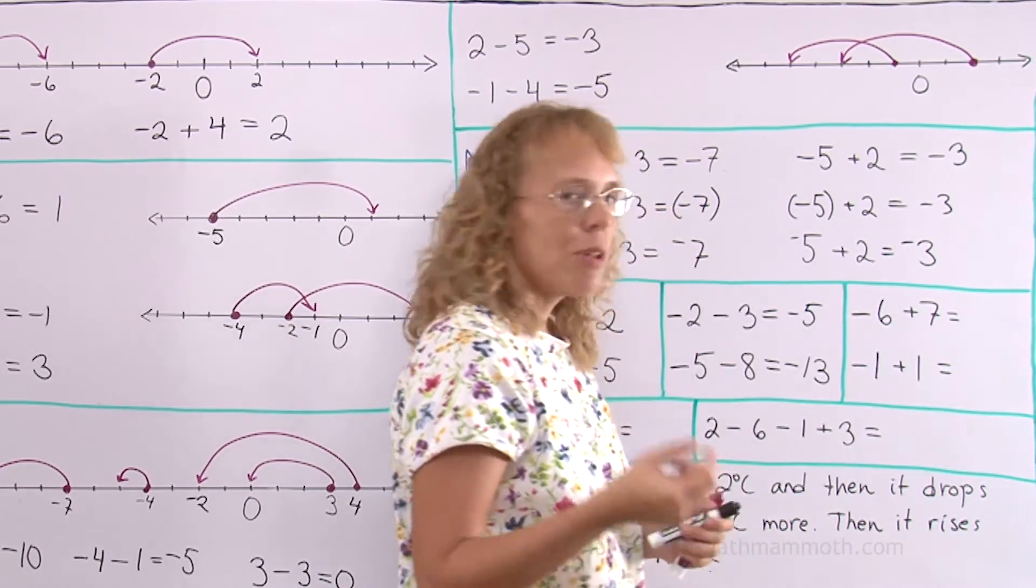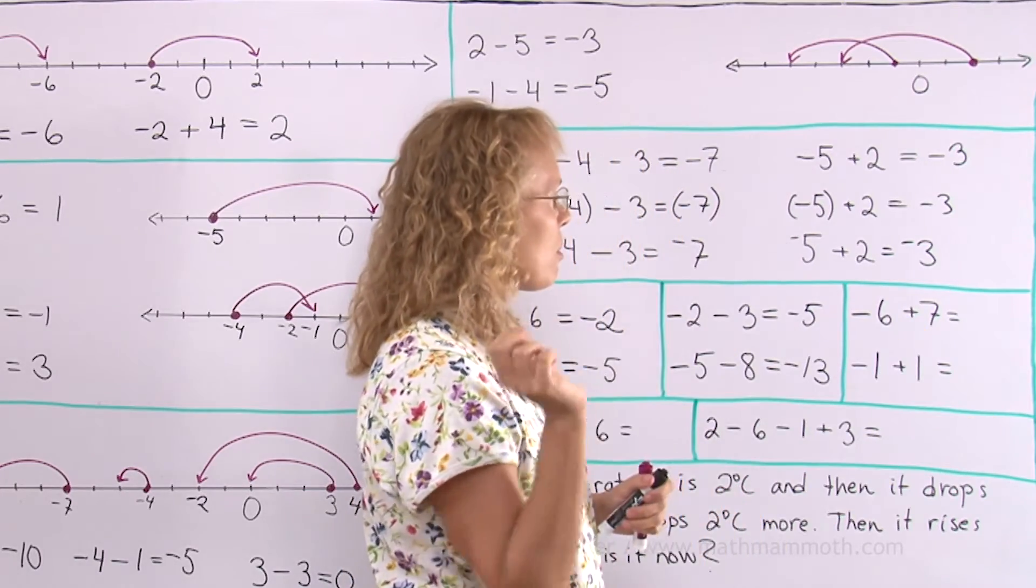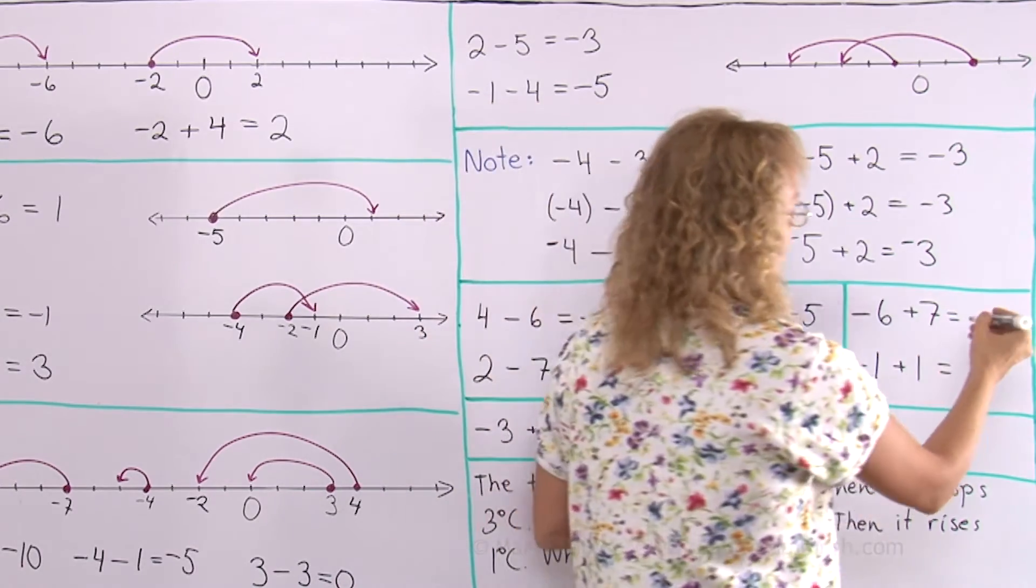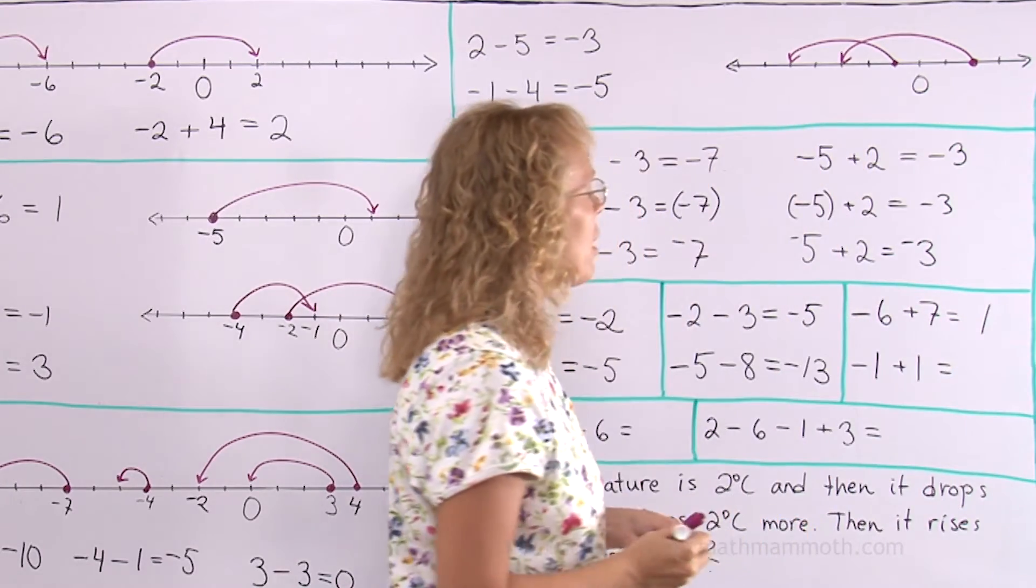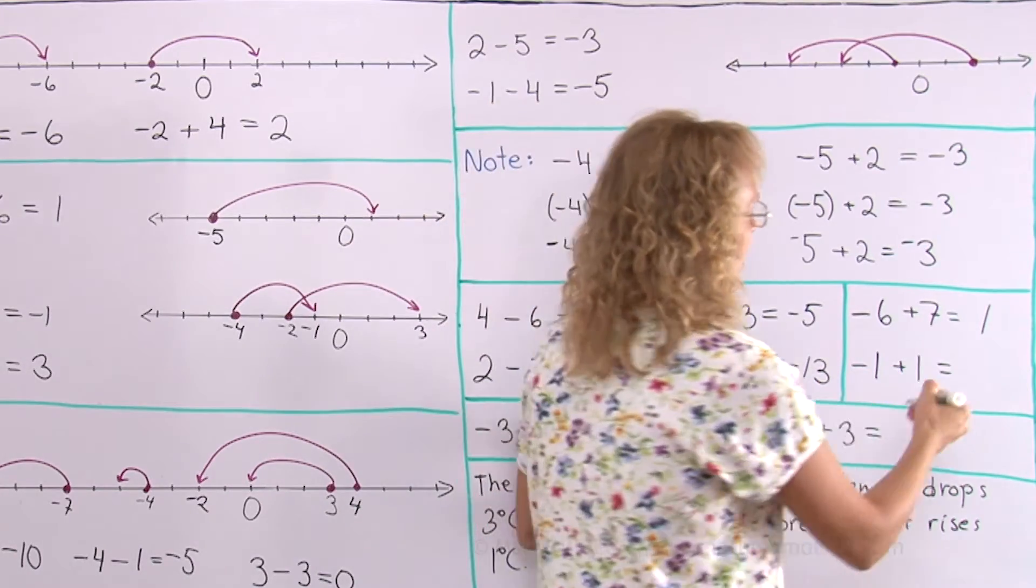Minus 6 plus 7. Now you are in the negatives but you come towards the positive. And 7 steps towards the positive is enough to get you past 0. You go just one step past 0 to 1. Negative 1 plus 1 just lands you exactly at 0.